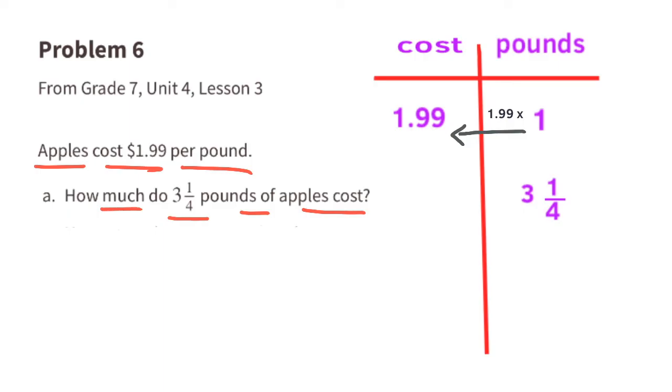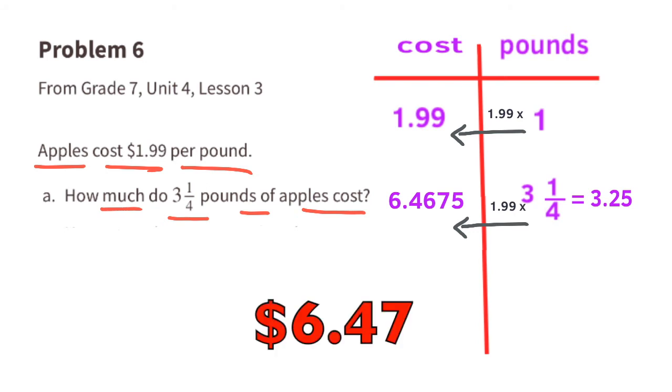At one pound for $1.99, we could multiply $1.99 times 3 and a quarter pounds, or $1.99 times 3.25, which equals just about $6.47.